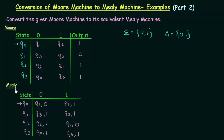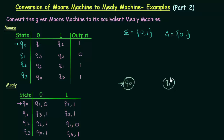Now we have drawn the transition table for the Mealy machine. Here the outputs are associated to the transitions. Now let's draw the transition diagram for this Mealy machine. We will start with state Q0, which is the starting state. I will make state Q1 over here, state Q2 here, and state Q3 over here.